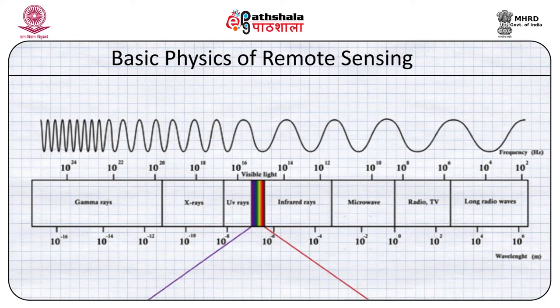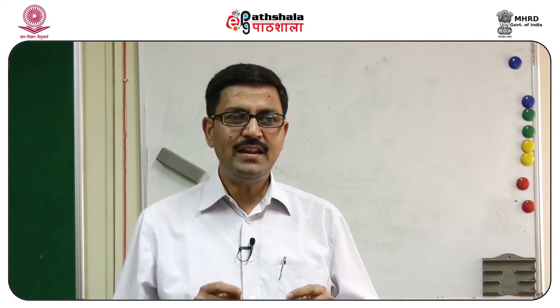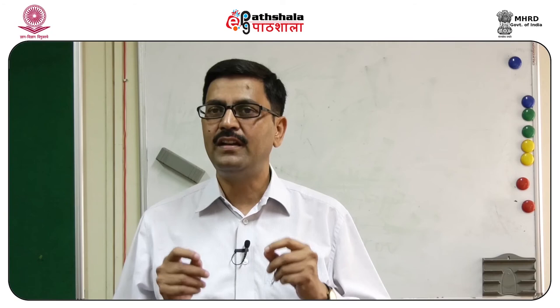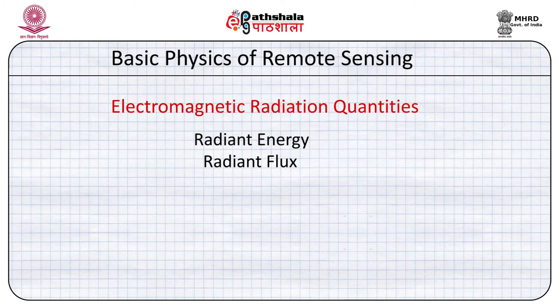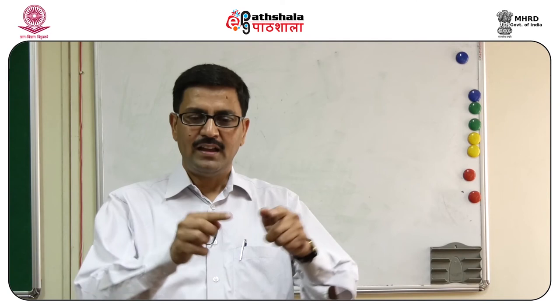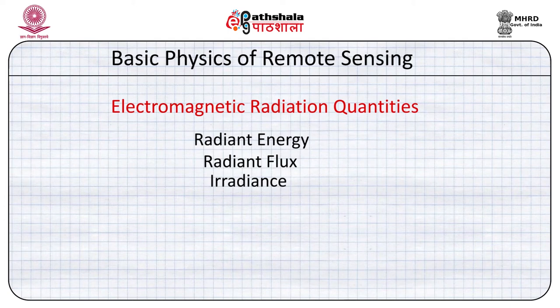Another learning objective is to understand electromagnetic radiation quantities. Radiant energy is defined as the energy carried by electromagnetic radiation — it causes the detector element at a sensor to respond. Radiant flux is the total power of radiation emitted by a source such as the sun or a lamp. Irradiance is the radiant flux intercepted by a plane surface per unit area, and its unit is watts per square meter.